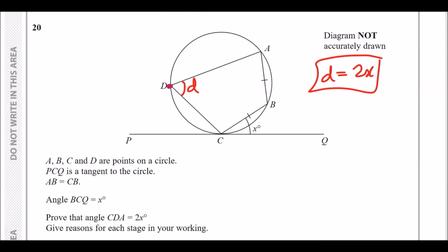Question 20: A, B, C, and D are points on a circle forming a four-sided shape. PCQ is a tangent — a line that touches the circle at exactly one point. AB equals CB, meaning those two lengths are identical. Angle BCQ equals x, and we need to prove that angle CDA equals 2x, giving reasons at each stage.